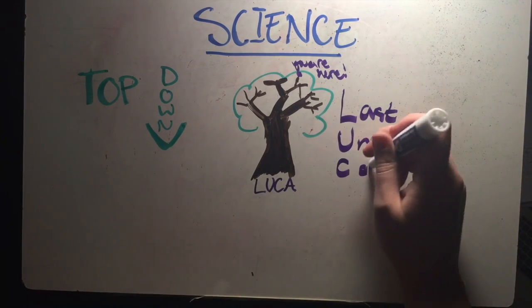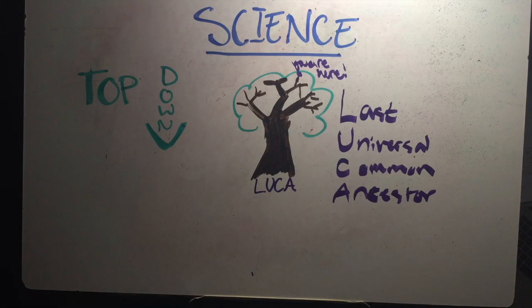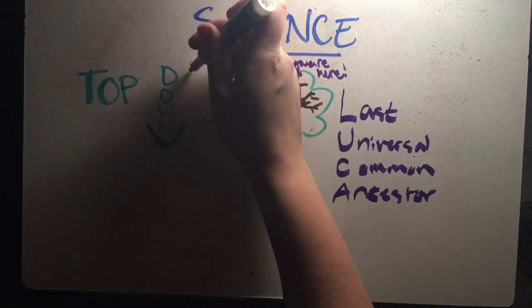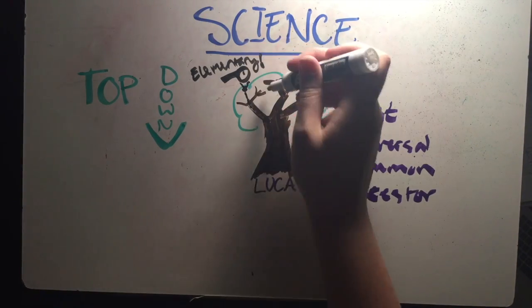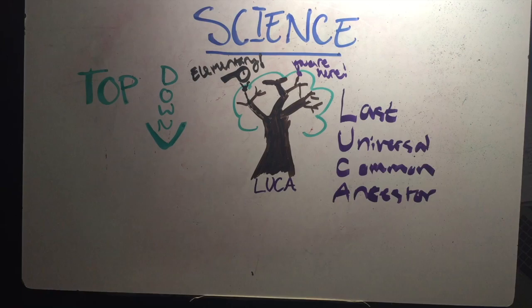At the bottom of the tree is a theoretical organism called LUCA, or the Last Universal Common Ancestor. This organism is the theoretical first living thing from which all other life on Earth is descended. Using the top-down method, researchers study organisms living today and then work backwards to learn more about LUCA.